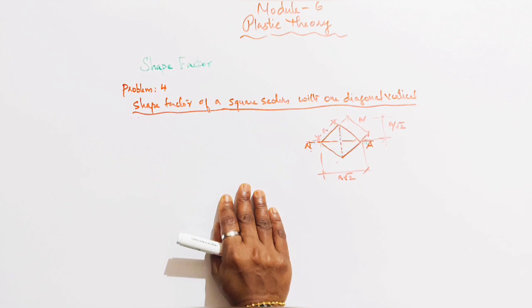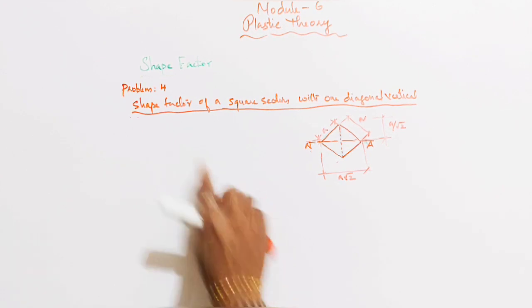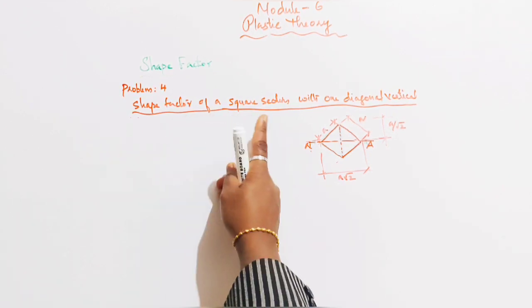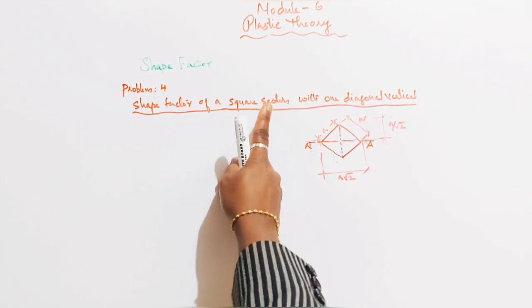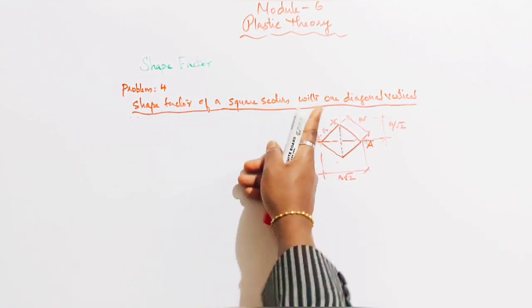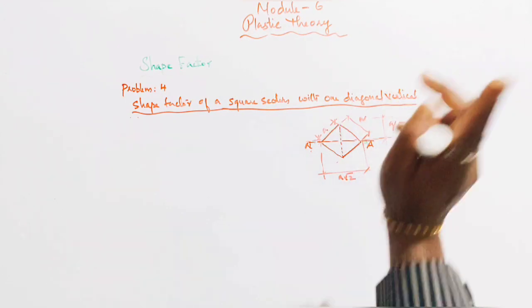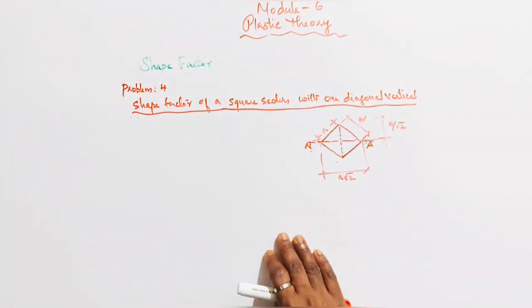Problem number 4: Shape Factor of a Square Section with One Diagonal Vertical.